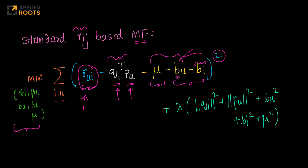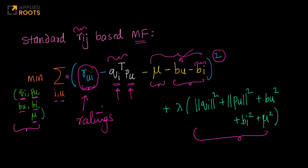The variables you need to minimize across are the optimal q_i, the optimal p_u, and the bias terms b_u, b_i, and mu. These are all parameters of this optimization problem, and there is a regularization associated with them. Remember that q_i is a vector, p_u is a vector, and the bias and global average terms are scalars. This is your standard matrix factorization approach when you only have ratings. In a basic setup you may not have the bias terms and global average, but we include them as that is a typical setup used with a ratings matrix.